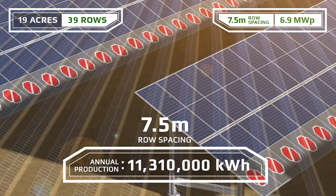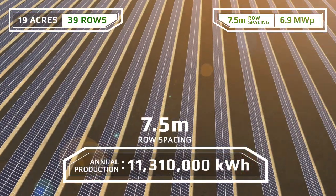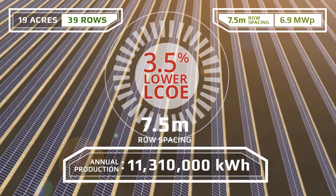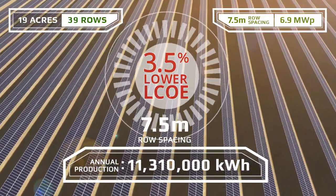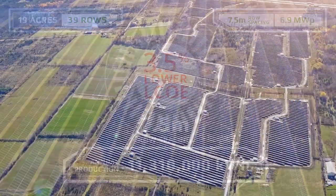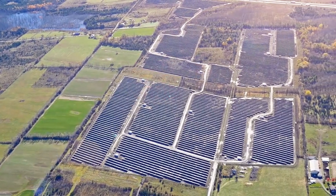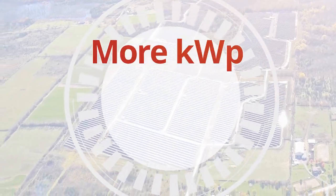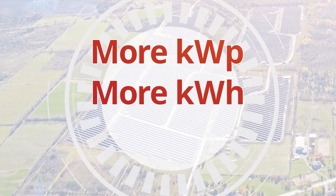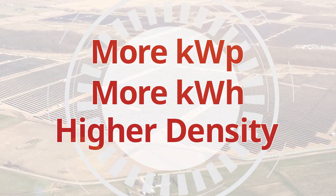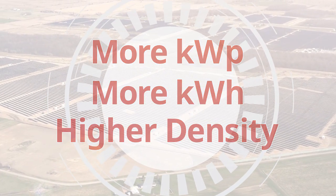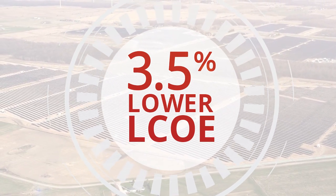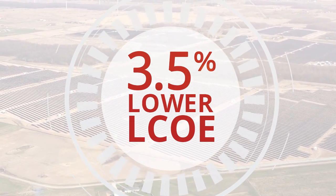Factoring in the additional equipment cost, KOO modules deliver a 3.5 percent lower LCOE. In summary, Canadian Solar KOO modules give you higher kilowatt peak power, more energy output, and better shading tolerance. All of this results in a 3.5 percent lower levelized cost of electricity.